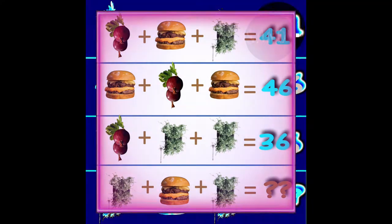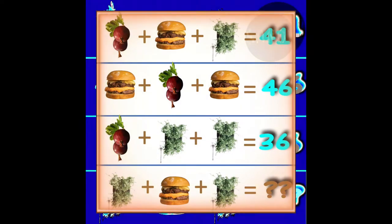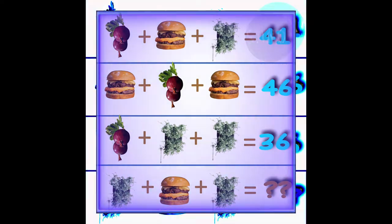Genesis 2:20-24 - And Adam gave names to all cattle, and to the fowl of the air, and to every beast of the field. But for Adam there was not found any help meet for him.